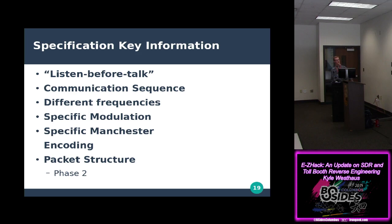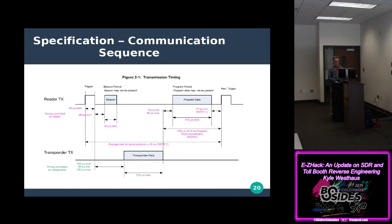The communication sequence: there's a trigger pulse by the reader, an optional beacon with some information, then the transponder sends one packet, the reader sends one packet, and that's it. It's very simple and very quick, which is important when vehicles are moving fast — everything must happen in the time the vehicle passes the reader. The range is about 100 meters.